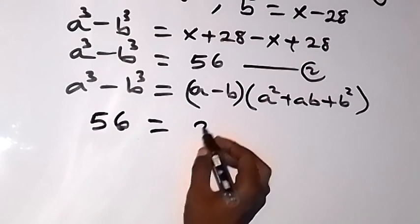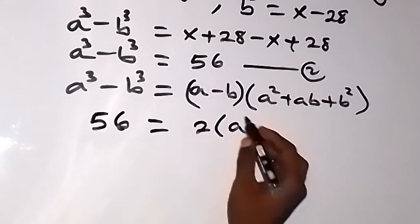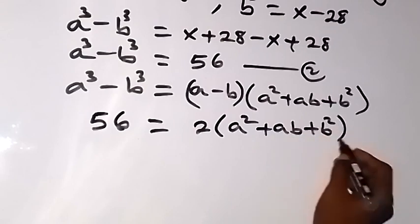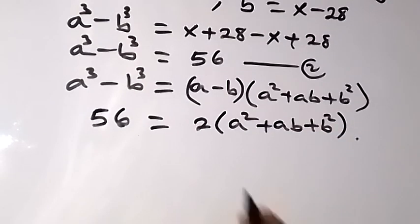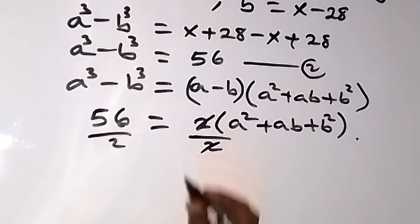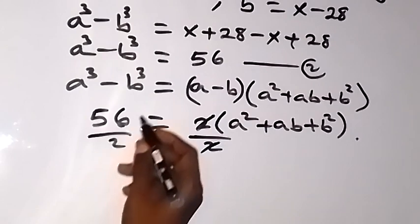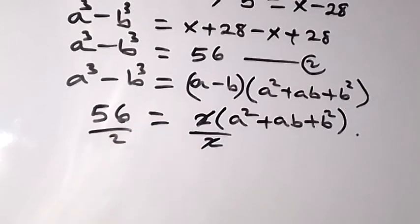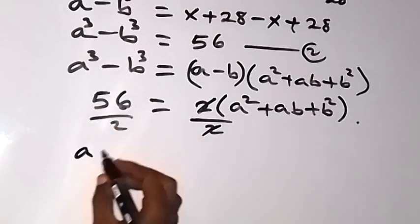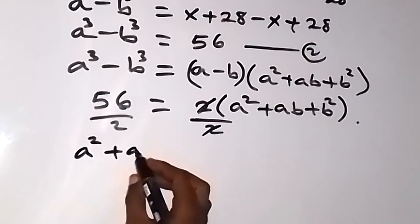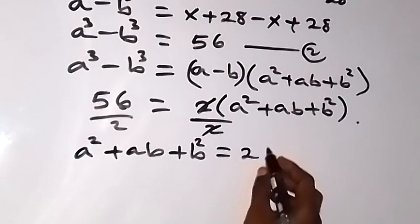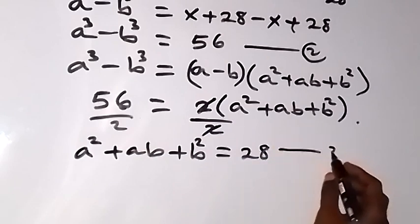Then 56 equals to 2 times a squared plus ab plus b squared. And here we can divide both sides by 2. 2 cancels 2 on this side, and 2 goes into 56 giving us 28. Therefore, we can equate this to 28 and say we have a squared plus ab plus b squared equals to 28. Let's call this equation 3.